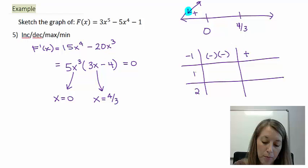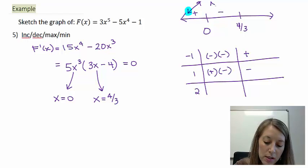In the middle, if I test 1, 1 cubed times 5 gives me 1, or positive. And 3 times 1 minus 4 gives me a negative. So this is negative, so it is decreasing in between 0 and 4/3.